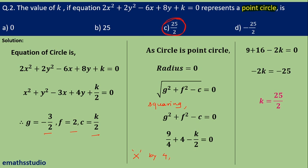This was again a simple question based on the point circle and the general equation of the circle. You can compare the given equation with x square plus y square plus 2gx plus 2fy plus c equals 0, obtain g, f, and c, then use the radius formula. Here we stop with the lecture. Thank you.